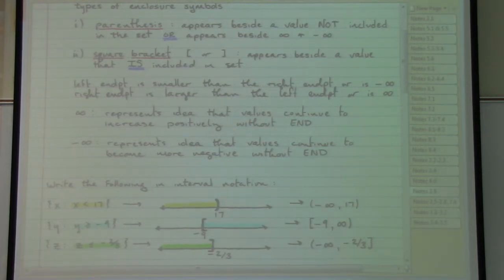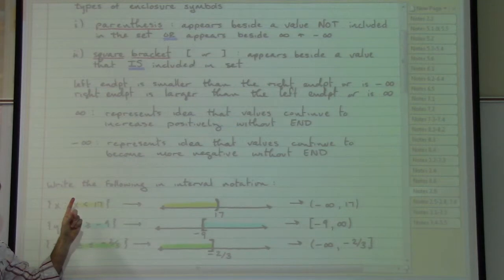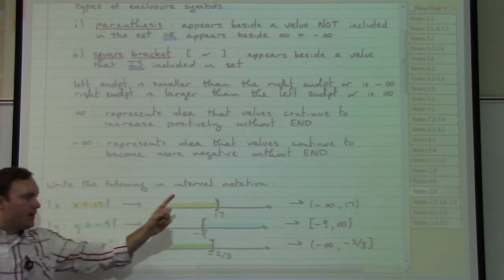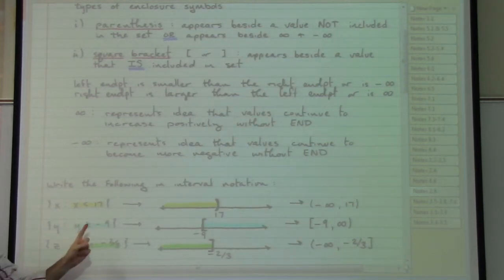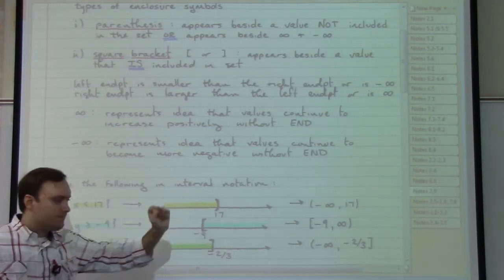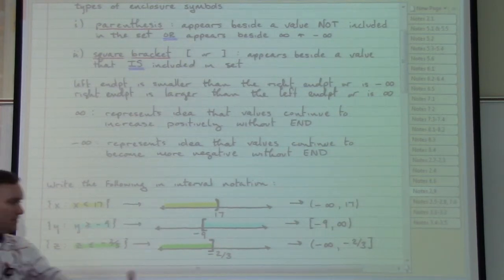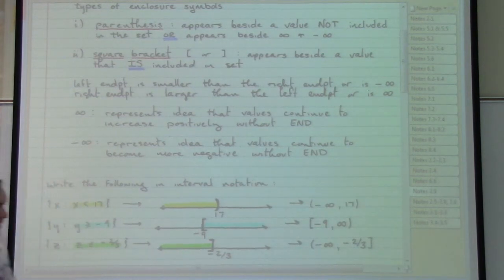We can also notice a pattern we can take advantage of: the inequality symbol actually points in the direction of where we want to color, as long as the letter appears first. For x less than 17, the pointy part is pointing to the left — we colored to the left of 17. For y greater than or equal to negative 9, the inequality symbol points to the right. For z less than or equal to, the inequality symbol points to the left. We can use that as a shorthand way of creating those drawings.